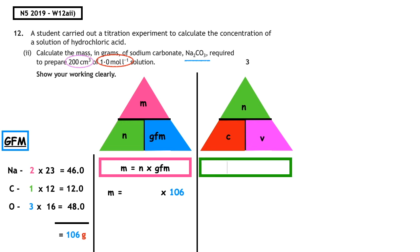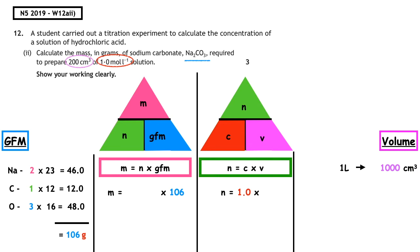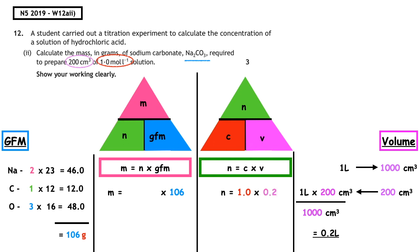Number of moles = c × v. The concentration given is one mole per liter. The volume given is 200 centimeters cubed, which is not in the appropriate unit, so we do a unit conversion: one liter equals 1000 centimeters cubed. We put 200 underneath 1000 — one times 200 divided by 1000 equals 0.2 liters. So number of moles equals one times 0.2, which equals 0.2 moles. Substituting into the final equation: mass equals 0.2 times 106, which equals 21.2 grams.